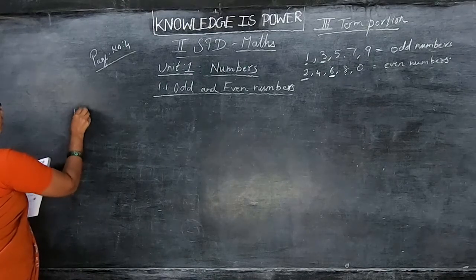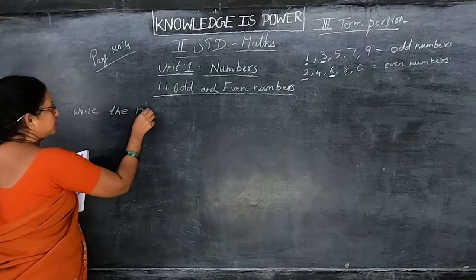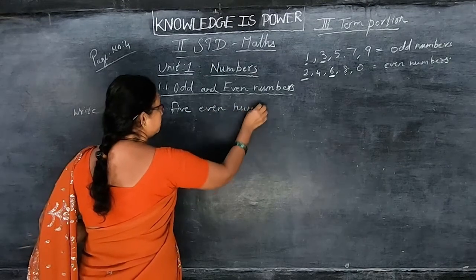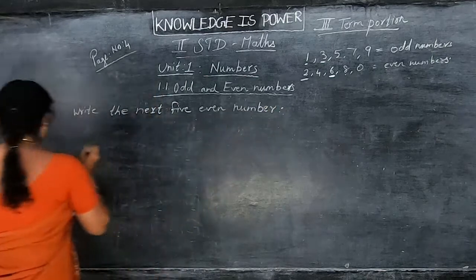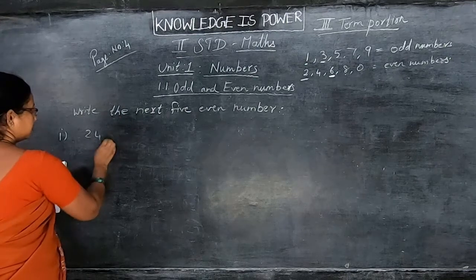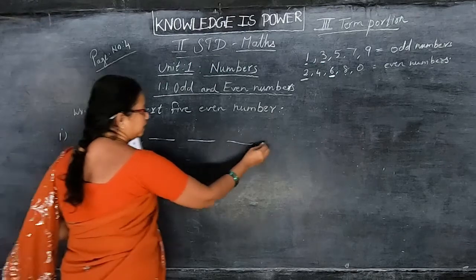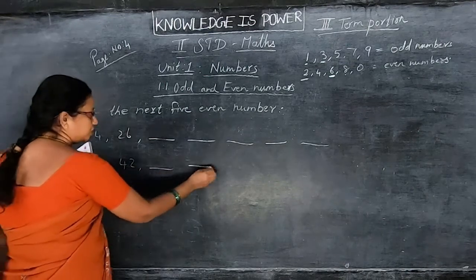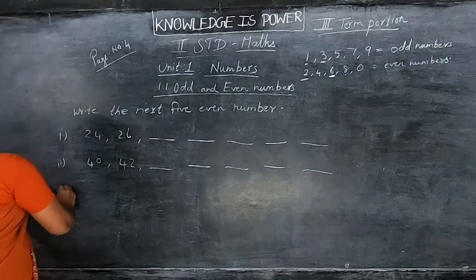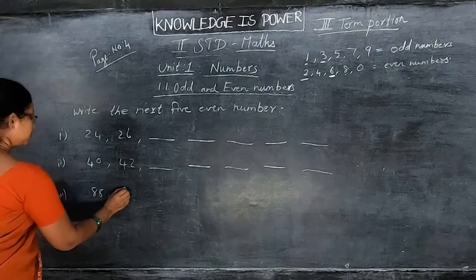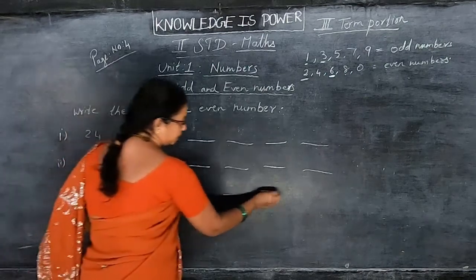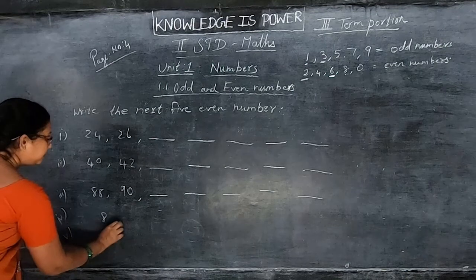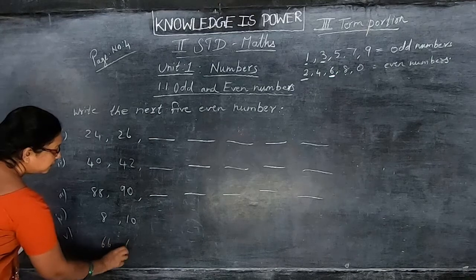Same page number 4 — write the next 5 even numbers. First one: they have given 24 and 26; continue the next 5. Second one: 40 and 42 are given; continue the next 5 even numbers. Third one: 88 and 90 are given; write the next 5 even numbers. Then 8 and 10 are given, and 66 and 68 are given.